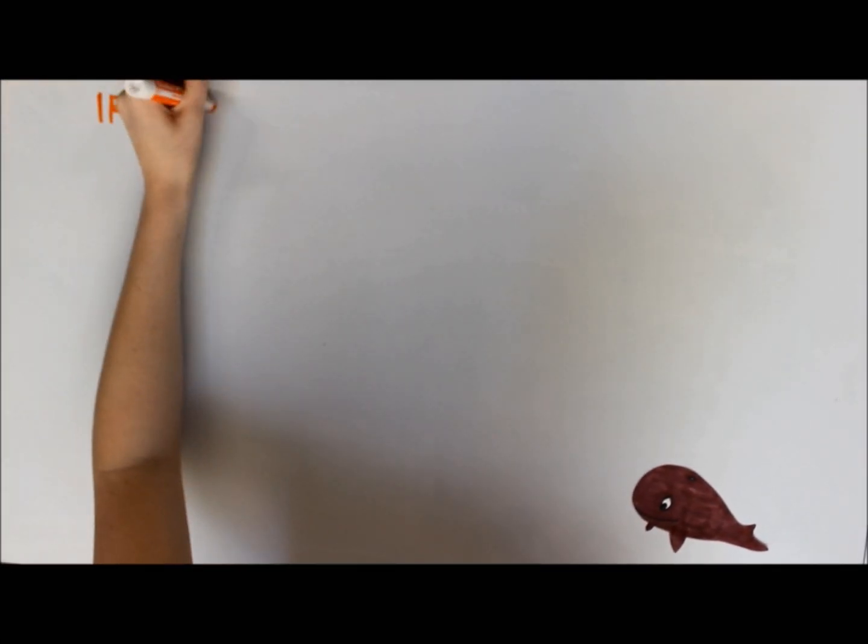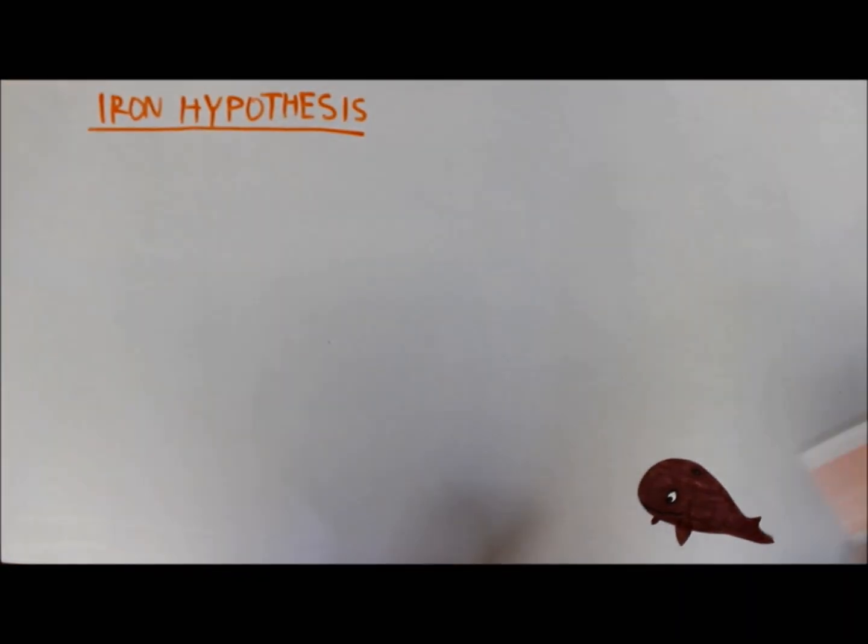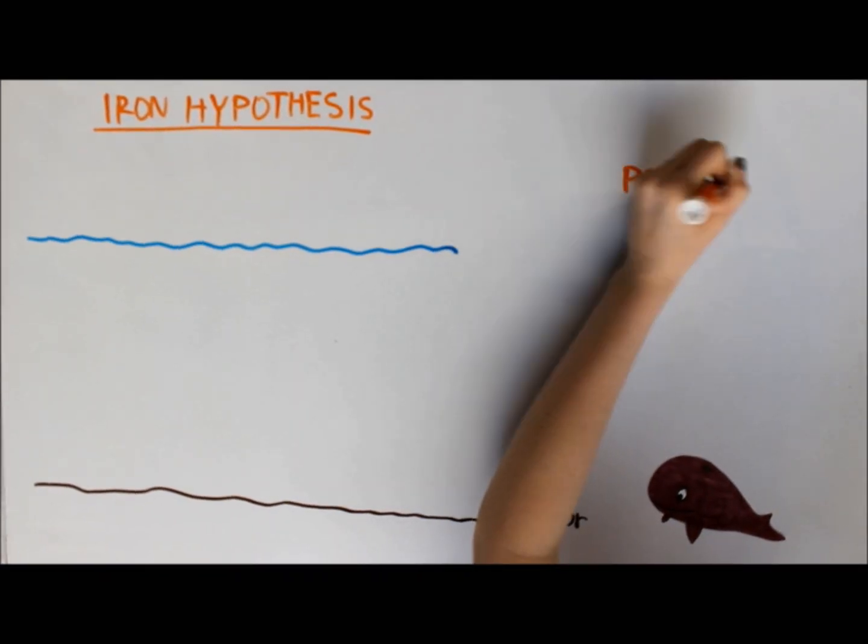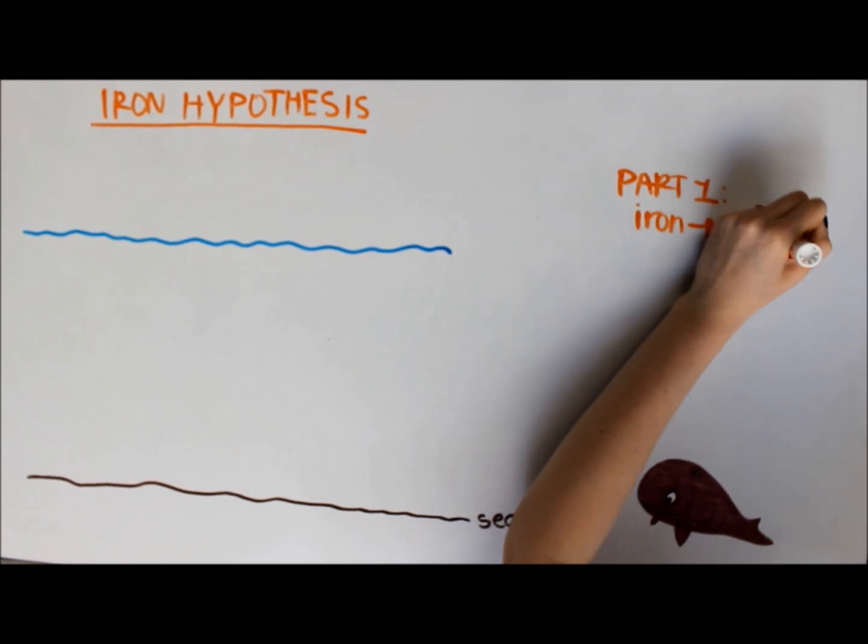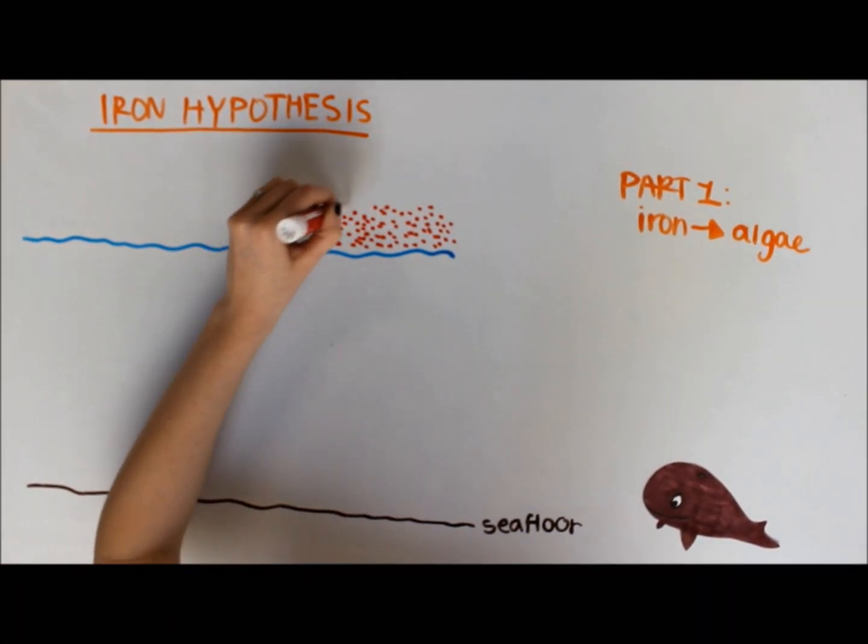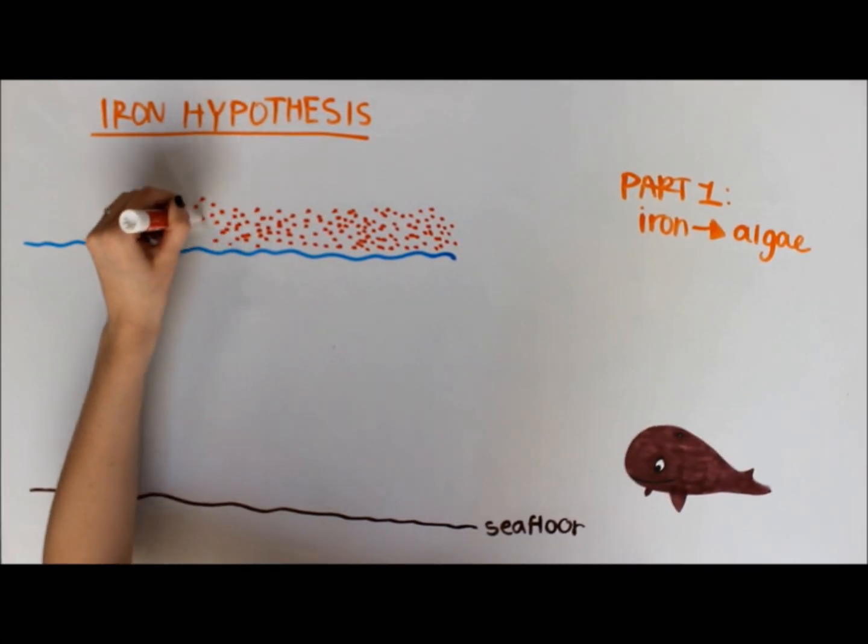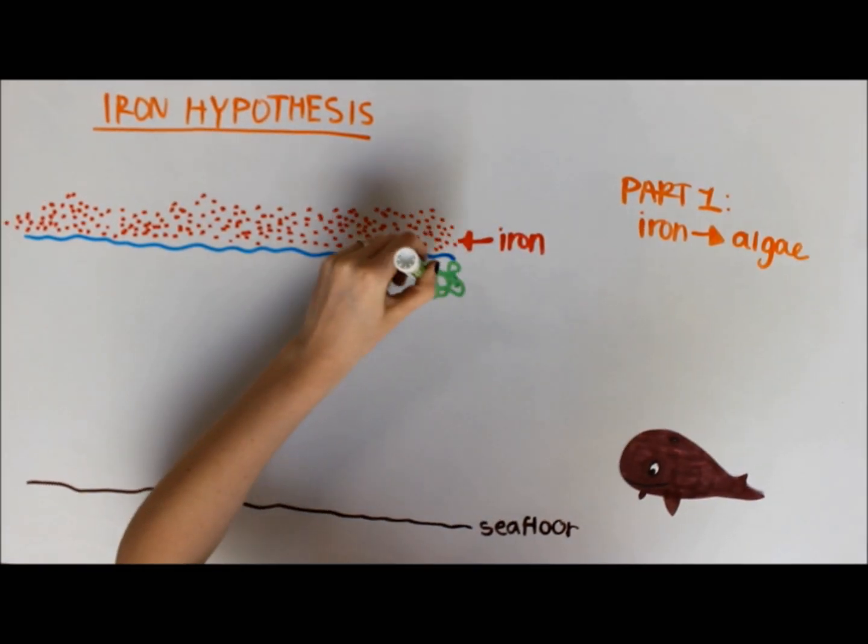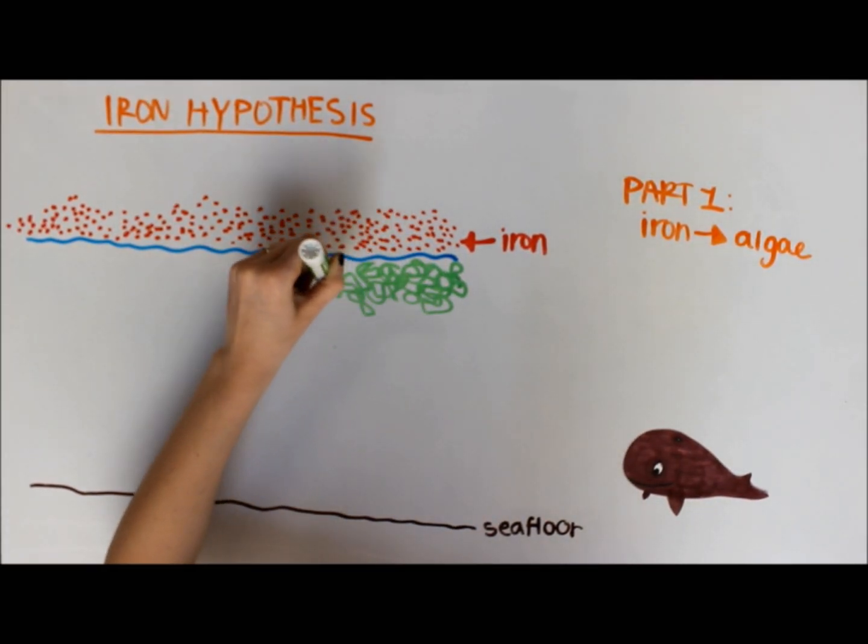This experiment focuses on proving the iron hypothesis. Glaciers in the southern ocean contain iron. The Antarctic Polar Front causes iron dust from the glaciers to mix with ocean water. This iron will cause a significant increase of algae growth. The algae is formed by a type of phytoplankton called diatoms.